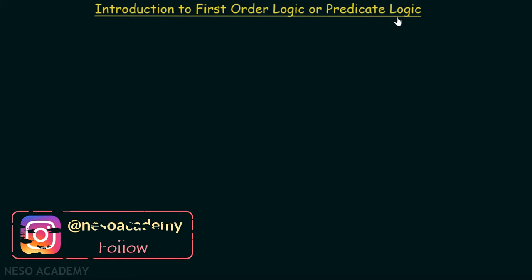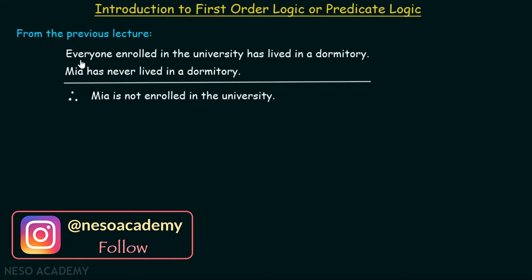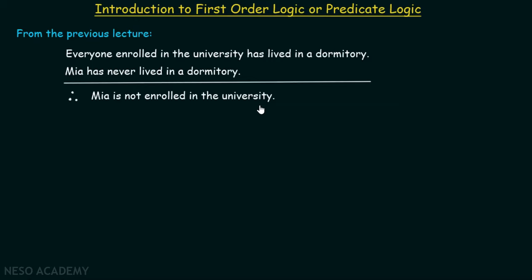In this presentation, I will introduce you to first order logic, or predicate logic. In the previous lecture, we have seen this argument: everyone enrolled in the university has lived in a dormitory; Mia has never lived in a dormitory; therefore, Mia is not enrolled in the university. We have seen that propositional logic is not capable enough to handle these type of arguments. That is why we have moved to first order logic, which has the capability to handle them.